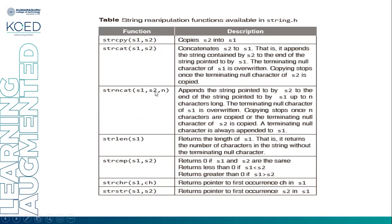Next, strncat(S1, S2, N), where N is an integer variable. It appends the string pointed to by S2 to the end of the string pointed to by S1, up to N characters. You specify how many characters of S2 are to be concatenated to the end of S1. Copying stops once N characters are copied or the terminating null character of S2 is copied. If N equals or exceeds the length of S2, copying stops when the null character of S2 is reached.